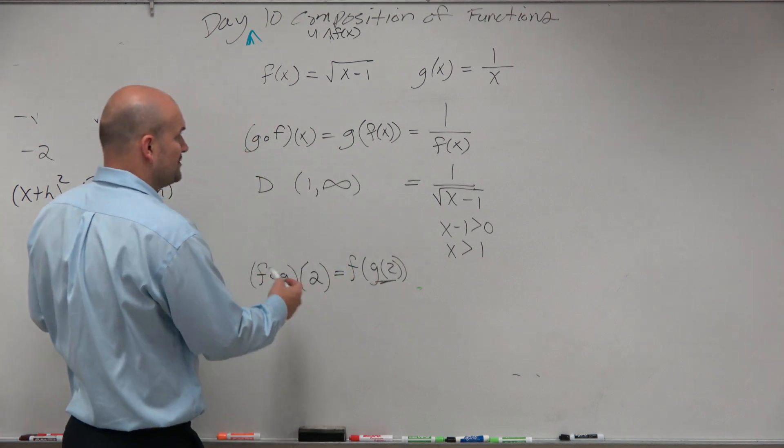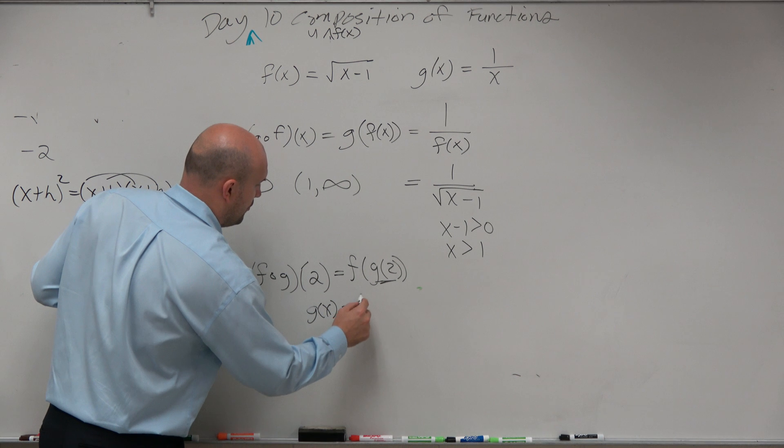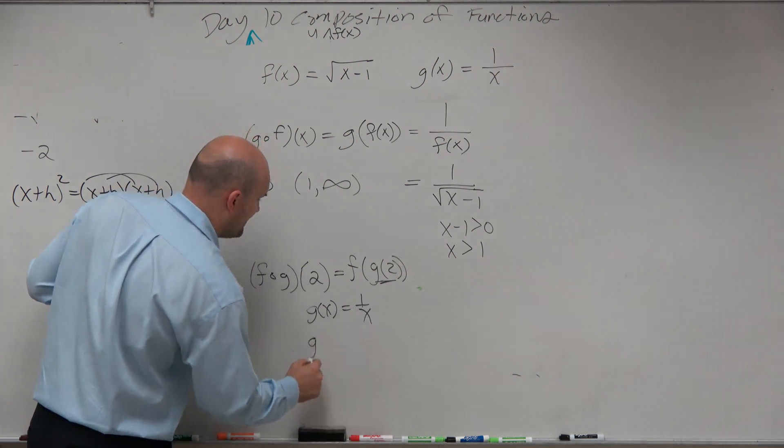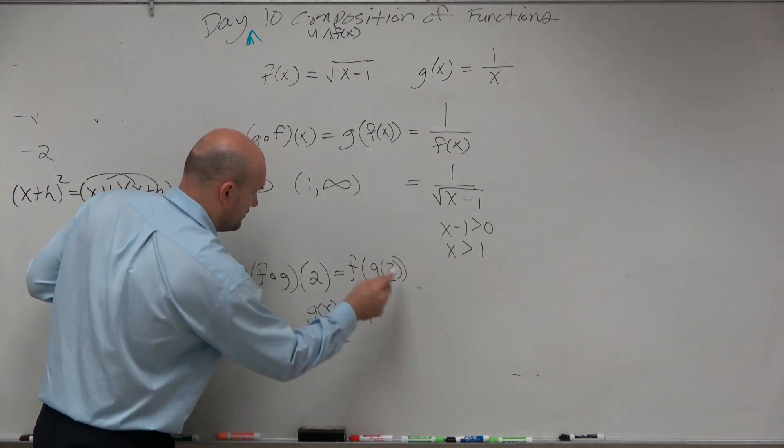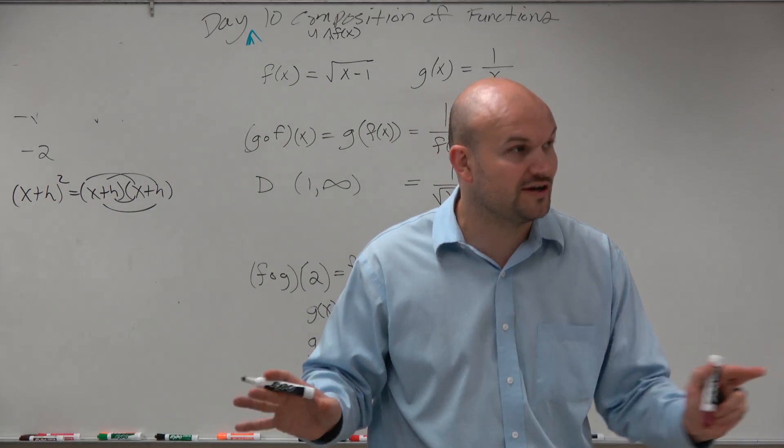So this should be like, ooh, I can do that. I know g of x is equal to 1 over x. So if I want to find out g of 2, then that's just going to be 1 half. That's not that bad, right? I figured that one out.